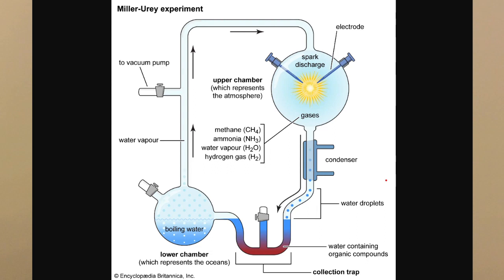The upper chamber already contains a bunch of gases — methane, ammonia, and hydrogen — and the water vapour now enters as well. In this container there is an apparatus that discharges sparks, called an electrical discharge apparatus, which essentially simulates lightning.